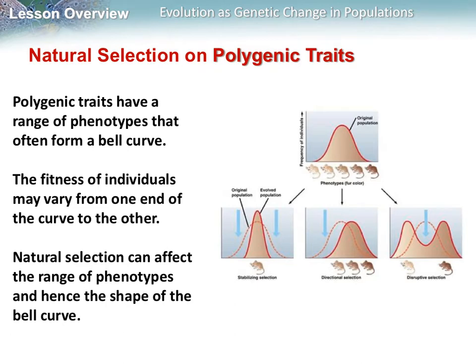When we have polygenic traits, the range of phenotypes often forms a bell-shaped curve. For example, with fur color of mice, very few are light-colored, very few are dark-colored, and most are in the middle. The fitness of individuals can vary from one end of the curve to the other, and natural selection can affect the phenotypes and the shape of this curve.